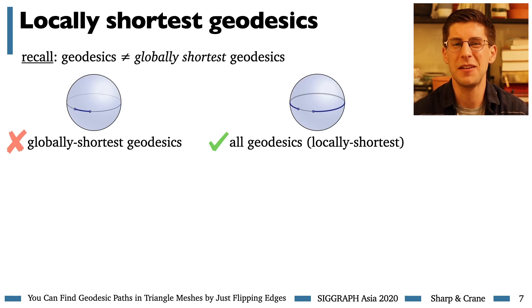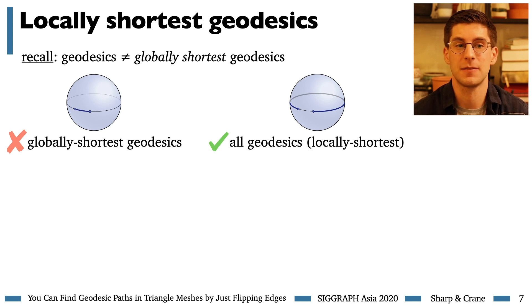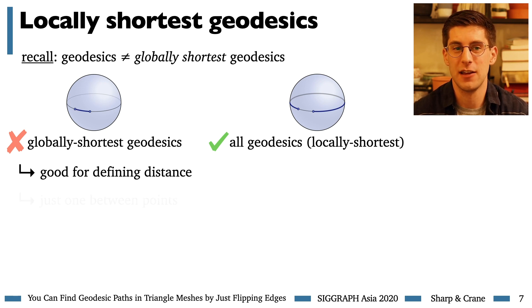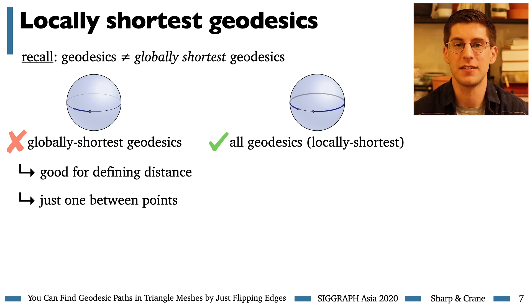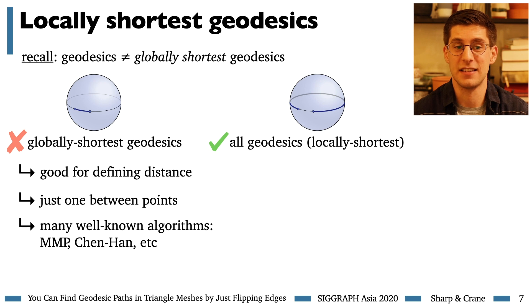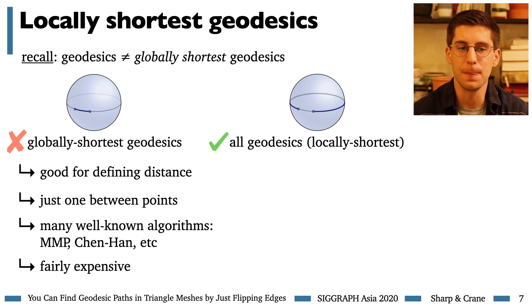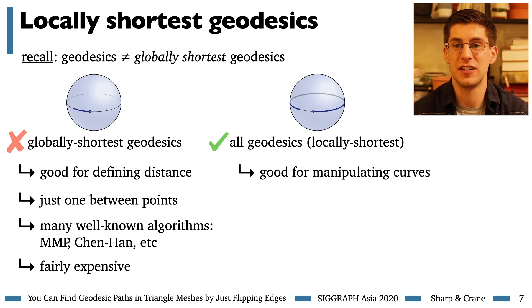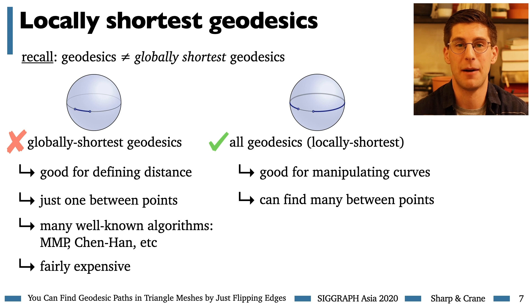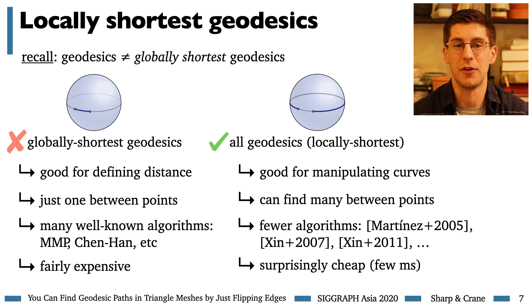When I say geodesics, you probably think first about shortest geodesics, but generally there are lots of geodesics other than the shortest one. A geodesic is more like a straight line — just a locally shortest path along a surface. Globally shortest geodesics make a lot of sense for measuring distance, but not as much for other applications, mainly because there's just one between any two points. We work more generally with the larger space of all geodesics which might only be locally shortest. These are really good for manipulating curves on surfaces, and there are actually quite computationally cheap algorithms for finding them.